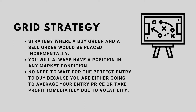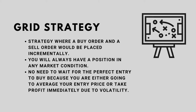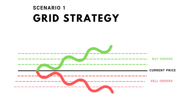Let's visualize to help us understand what the grid strategy looks like. I will show you three scenarios. In the figures I will be showing you, there are the current prices, buy orders, and sell orders. Scenario 1 would be the market moving in one direction, either up or down.